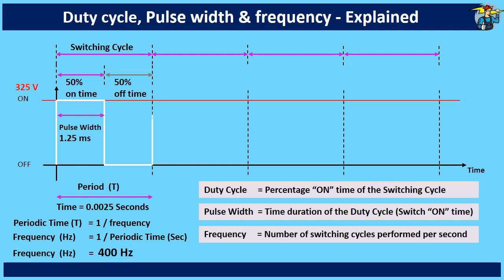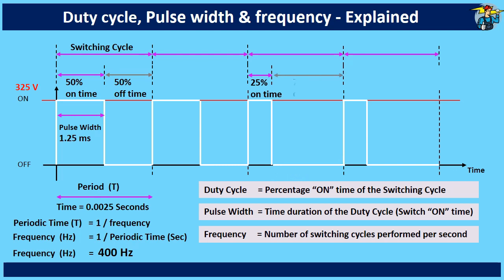Let's see a different switching time now. Although the frequency remains constant here, duty cycle is 25% now. That means switches are at off position during 75% of the periodic time. Then the pulse width also reduced to 0.625 milliseconds now.